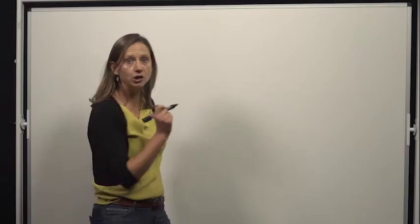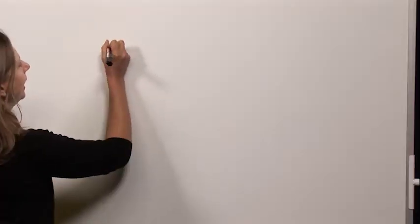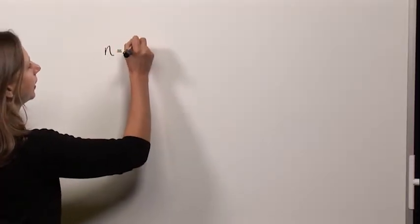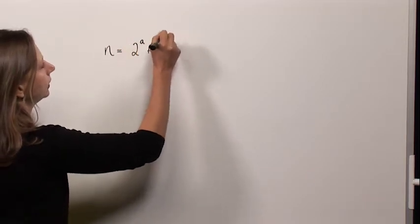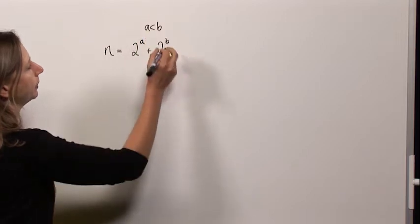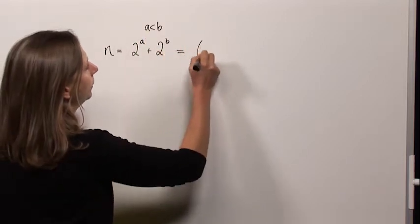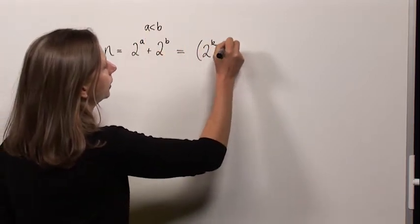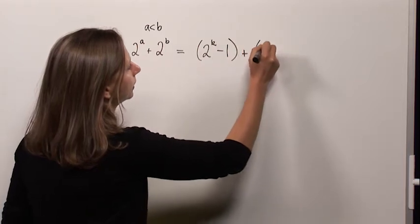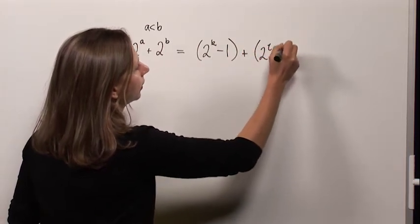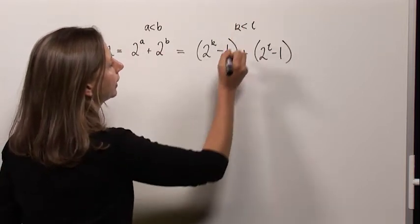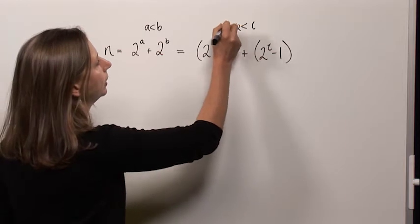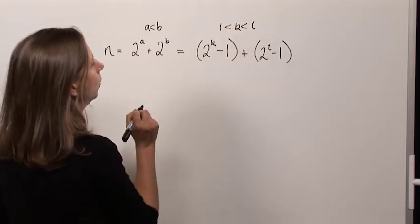Right, so we are looking for a number n that is the sum of two different powers of two, and because they are different, I can say that a is less than b. It's also the sum of two different Mersenne primes, so again, I can say that k is less than l, but I can say something slightly more. Because both of these are prime, I know that they've got to be bigger than one.